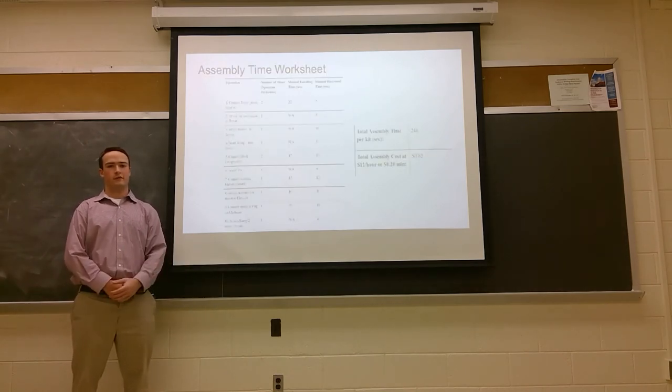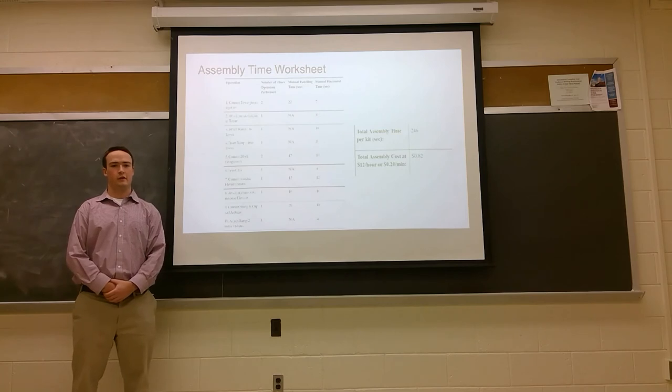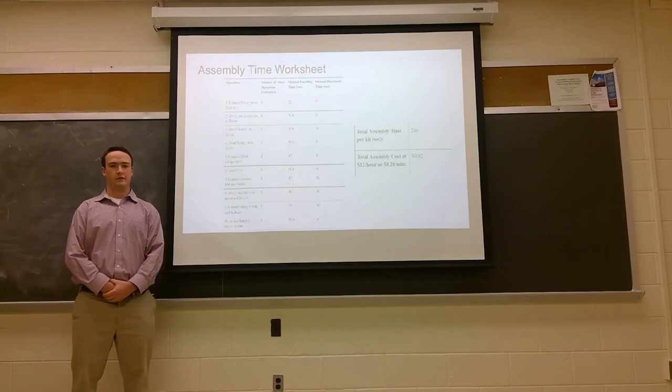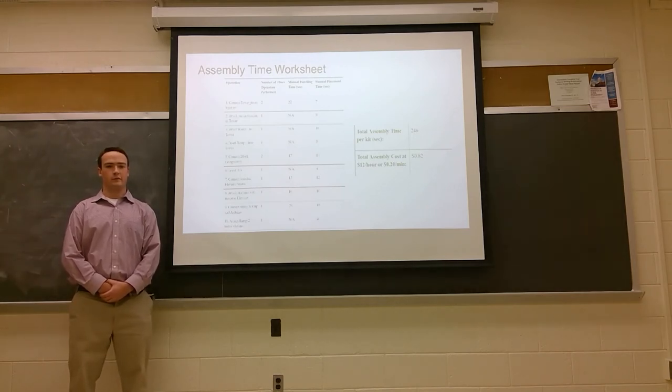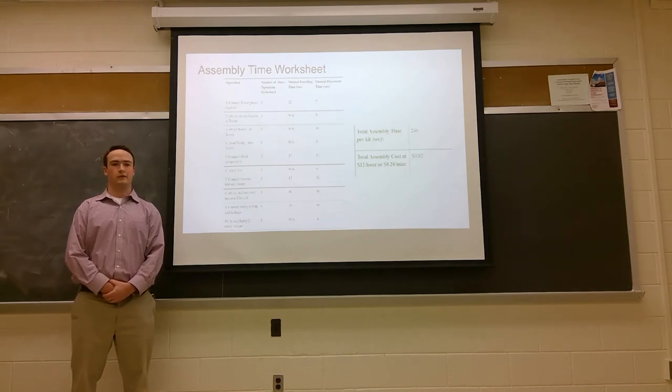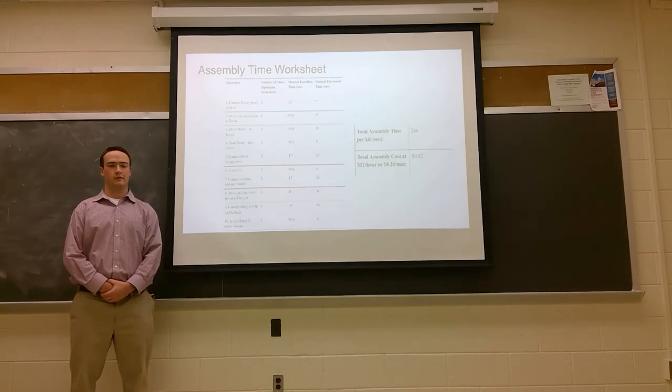These are the operations for assembling the team's BRG kit. Through actual testing and manual handling and placement, average times are found to complete each task and are also listed in the table. After calculation, total time was found to be 246 seconds per kit. The team then estimates the labor for assembly to be $12 an hour, or 82 cents per kit. The team finds this assembly cost to be very beneficial as it allows for more money to be spent on better materials and more effective manufacturing processes.